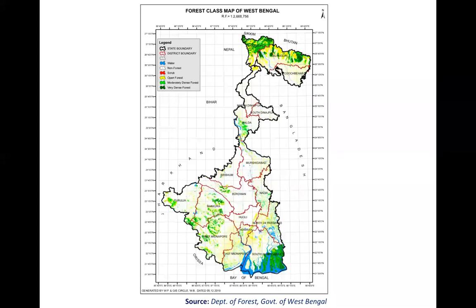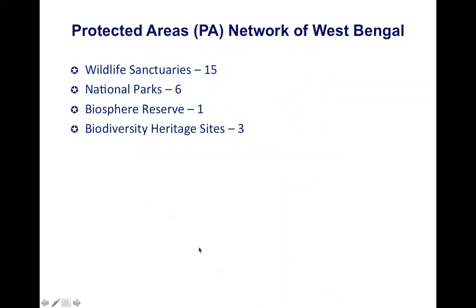West Bengal has a chain of 15 wildlife sanctuaries, six national parks, one biosphere reserve, three biodiversity heritage sites, and also two tiger reserves.